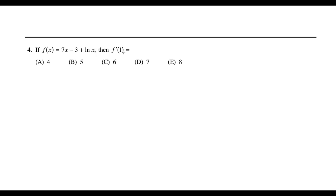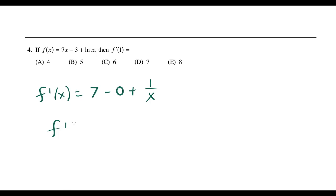For question four, take the derivative and plug in 1. f'(x) = 7 − 0 + 1/x. So f'(1) = 7 + 1/1 = 8. This is choice E.